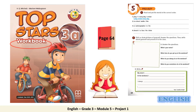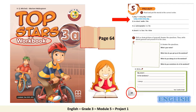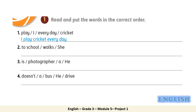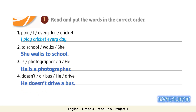Now open your workbook, page 64, and let's work on Activity 1 together: Read and put the words in the correct order. The first one is done for us — we have: play, I, every day, and cricket. The correct sentence is: I play cricket every day. Pause the video and try the rest by yourself. Now check your answers. Number 2: She walks to school. Number 3: He is a photographer. Number 4: He doesn't drive a bus. You are a superstar!